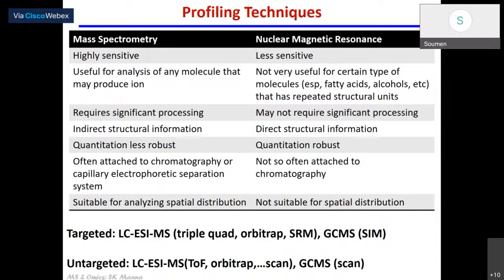Quantitation is a significantly high point of NMR — quantitation is very robust in NMR compared to mass spectrometry in general. And NMR gives you direct structural information. Mass spectrometry gives relatively indirect structural information. However, mass spectrometry scores over NMR in that you can use mass spectrometry to spatially resolve biochemical distribution, which you cannot do by NMR. So if you really want to distinguish how your metabolites or proteins are distributed in a spatially resolved manner — how it is different between two adjacent cells — mass spectrometry is the method, not NMR.